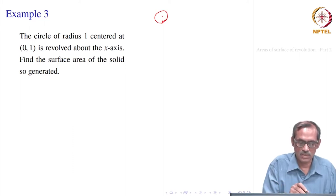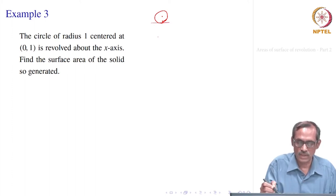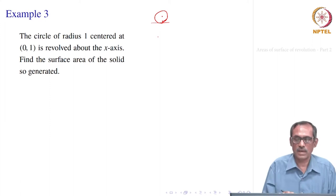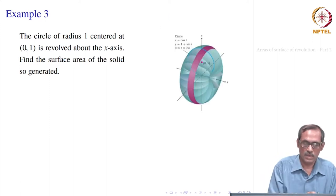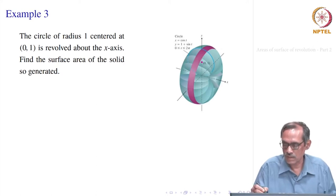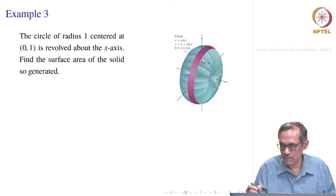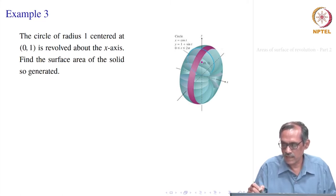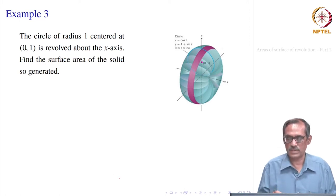So, does it touch the x-axis? It is centered at (0, 1) with radius 1, so yes. It will be revolved — what is the surface area of revolution? If you look at the picture, you have the circle touching the x-axis, then it is revolved around this, so you get a surface. We want to find the area of this surface.